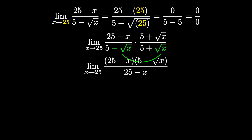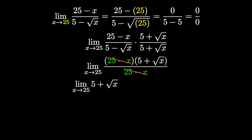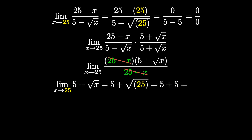Now notice that both the numerator and denominator contain 25 minus x — this is our hole. We cancel out the 25 minus x's, leaving us with 5 plus the square root of x. Once we cancel those holes, we can reevaluate the limit, because plugging 25 into 25 minus x gives 0, and 0 times anything is 0, which was causing the 0 over 0 form. Now that we've removed the problem, we plug in 25 into our simplified function: 5 plus the square root of 25. The square root of 25 is 5, and 5 plus 5 is 10. Therefore, our limit is 10.